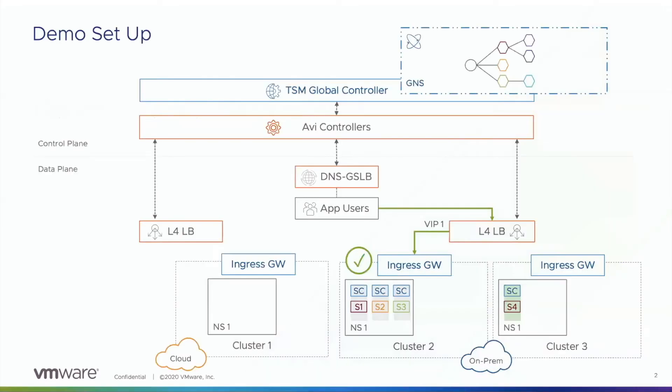For this demo, we have three Kubernetes clusters across two different sites or regions, all of them onboarded onto TSM. We also have NSX-ALB which is configured on both the sites to provide infrastructure load balancing as well as GSLB, with the on-prem site acting as the GSLB leader.